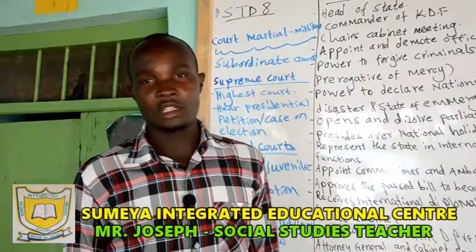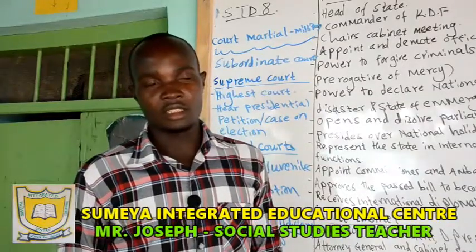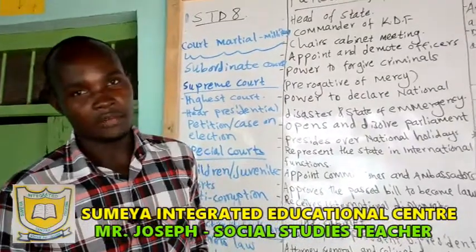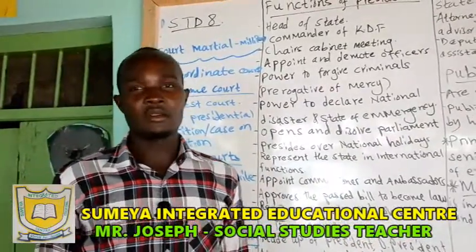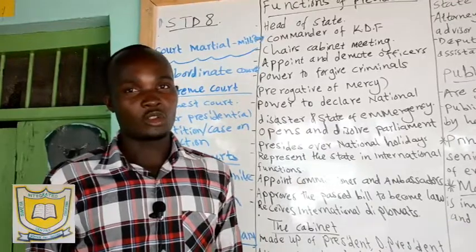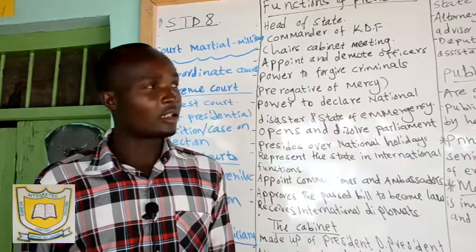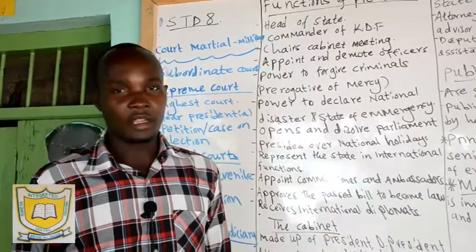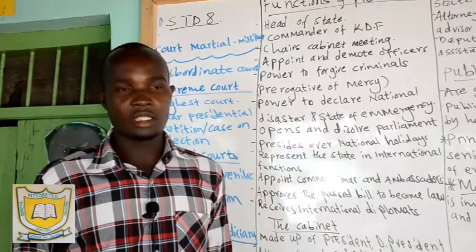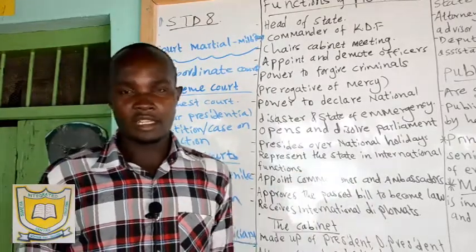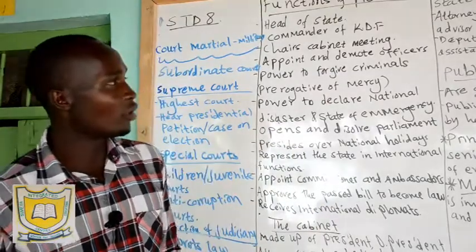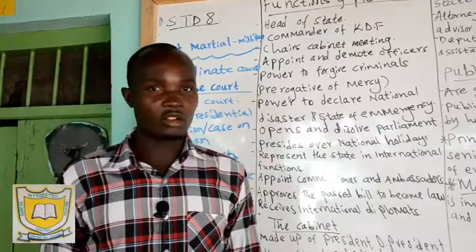Good morning everybody. Welcome to our lesson today. We are still under the government of Kenya. We defined what a government is. We looked at the levels of government in Kenya. We also looked at the legislature as an arm of the government — the role of the National Assembly, the role of the Senate, and the role of the legislature in general.